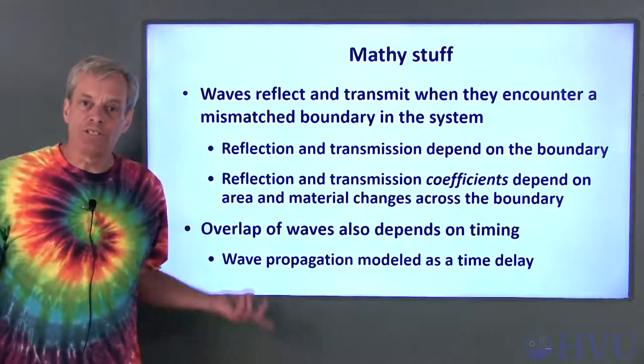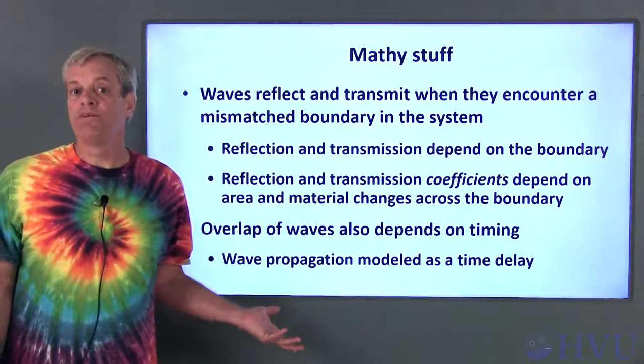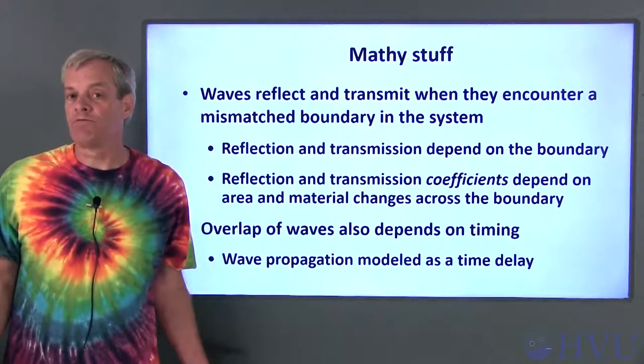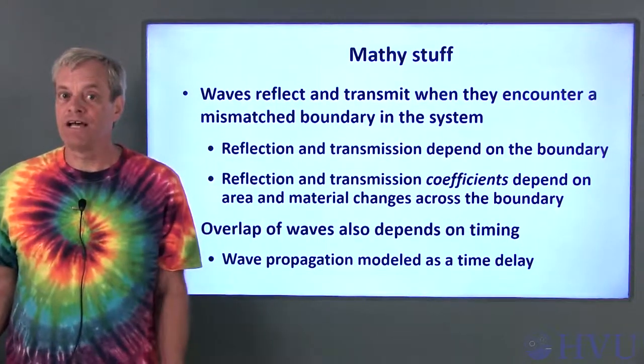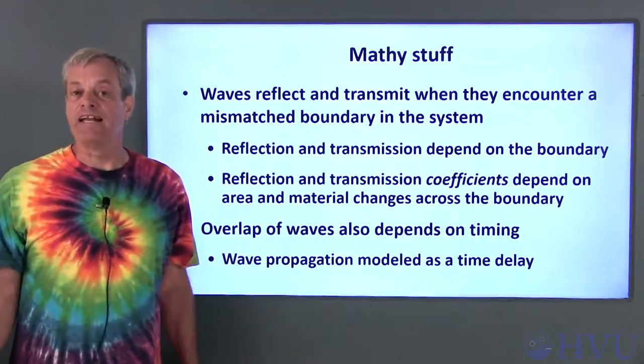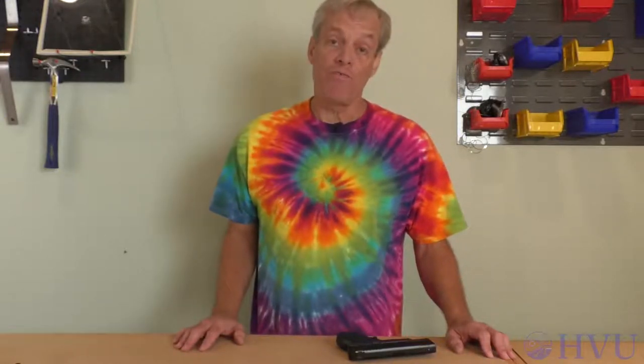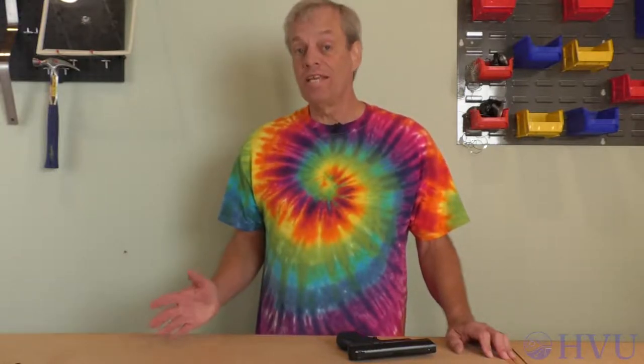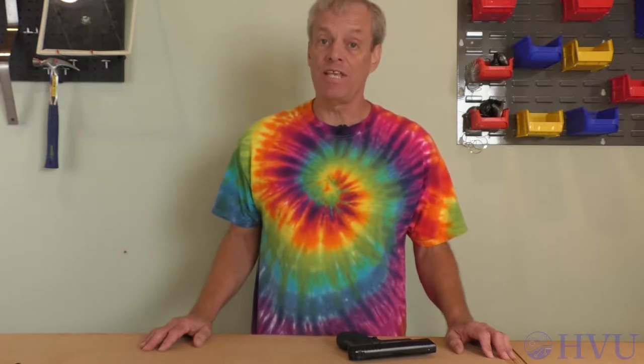Generally, the difficulty in these types of analysis is keeping track of all the different waves and where they are at any given time, so it's actually more of a bookkeeping problem than anything else. Small variations in geometry can make a big difference in wave propagation phenomena. This makes the math really tricky, so when we analyze systems like this, we tend to make a lot of simplifying assumptions and then add a margin of safety to account for the variations.